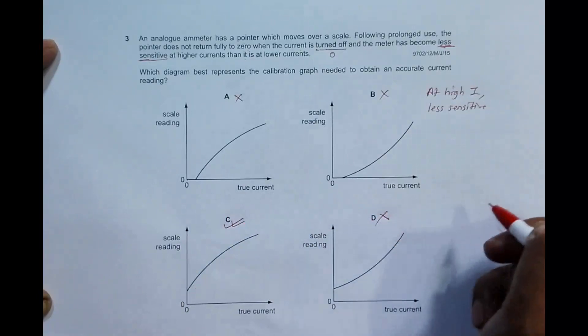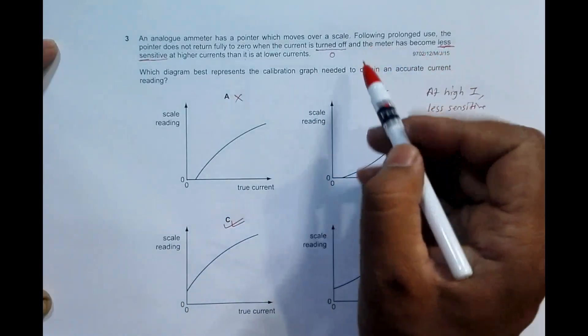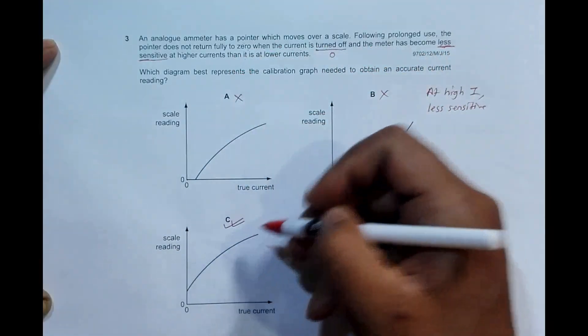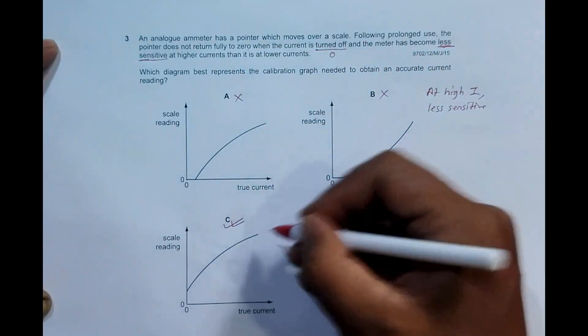So what it says is the meter has become less sensitive at higher current. At high value of current, less change. High value of current, more change. So this thing qualifies as the correct answer.